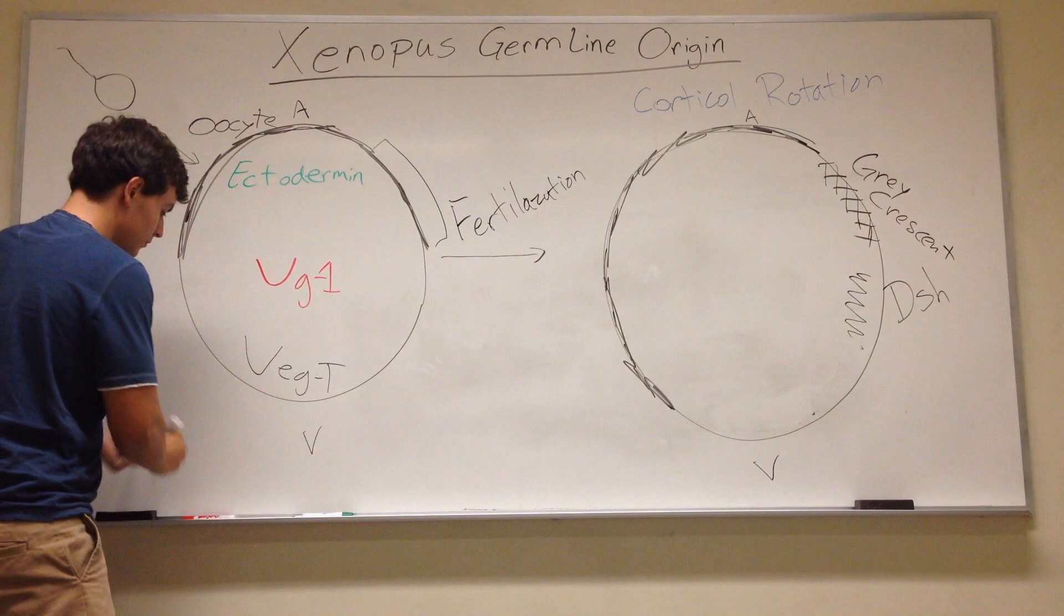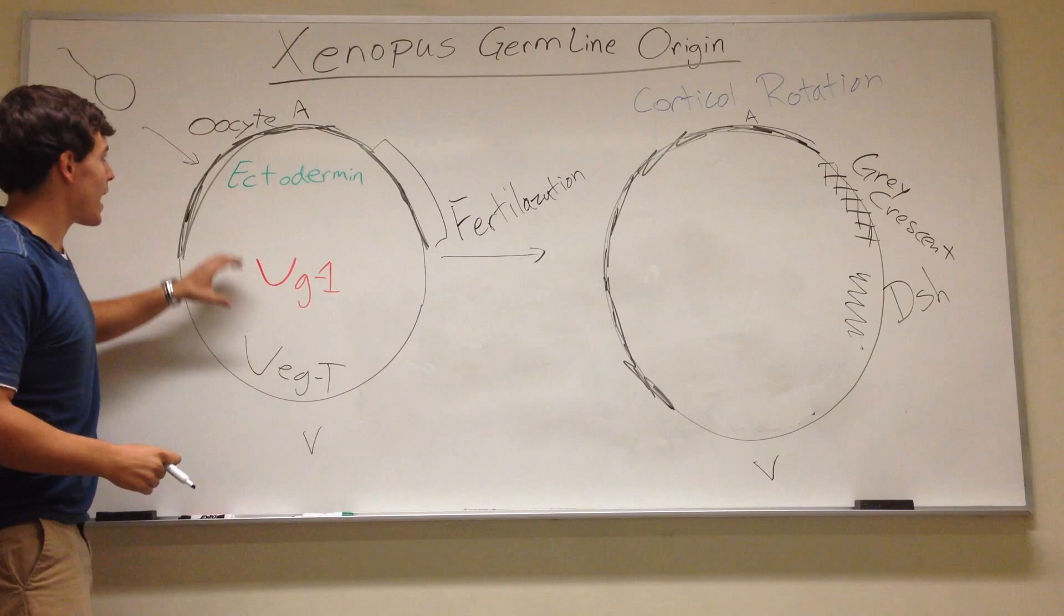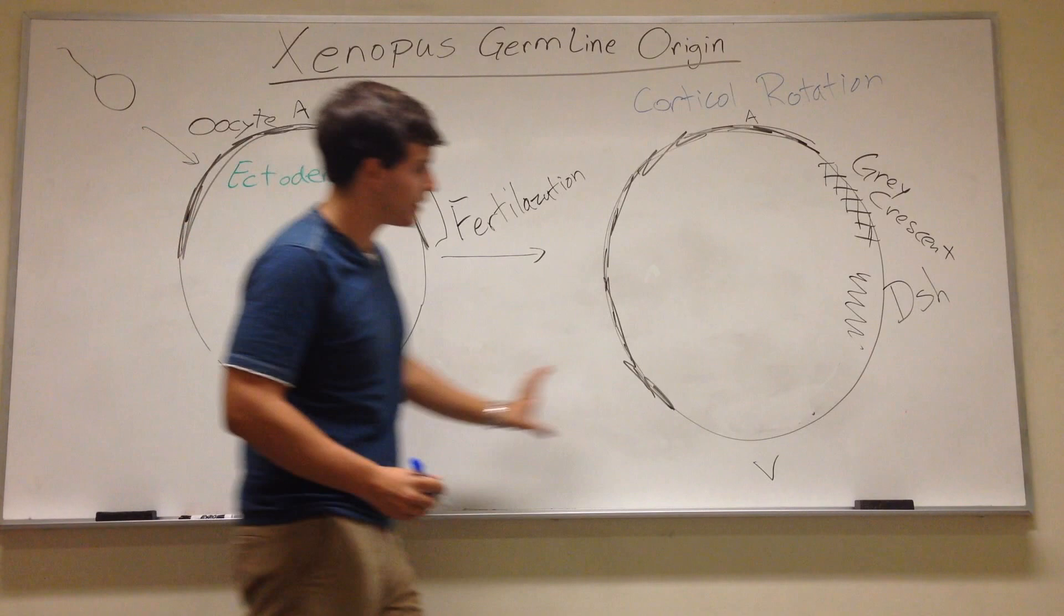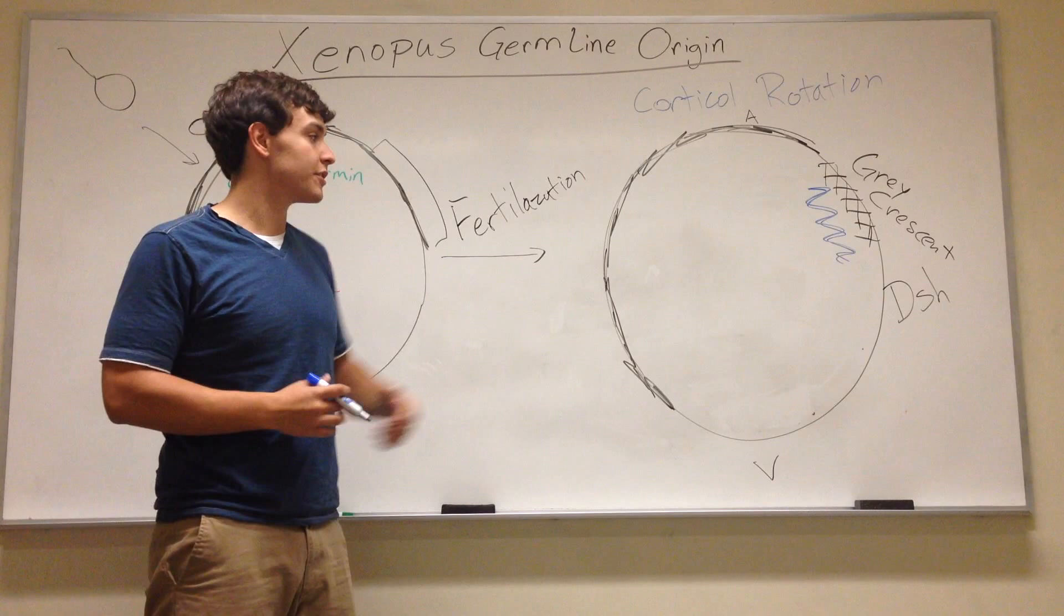So the gray crescent is one of those famous experiments that we saw that is really important for the Xenopus development. After fertilization, disheveled, which is normally down in the vegetal pole, it gets shifted up. I'm drawing it in blue now. It gets shifted up into the gray crescent and is thus important for the next stage of development.